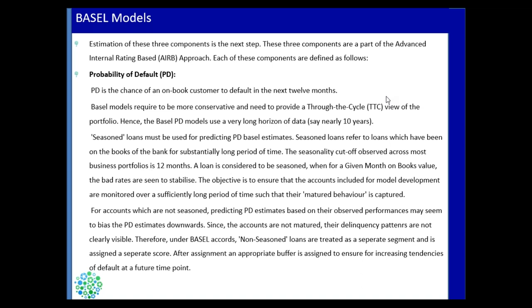There are two types of PD models: Point-in-Time and Through-the-Cycle. The Through-the-Cycle approach is the main component of probability of default models. PD models take a very long horizon of data — say 10 years — pulling data from the last 10 years of the customer portfolio and performance, and building a model to predict defaults for the next 12 months.